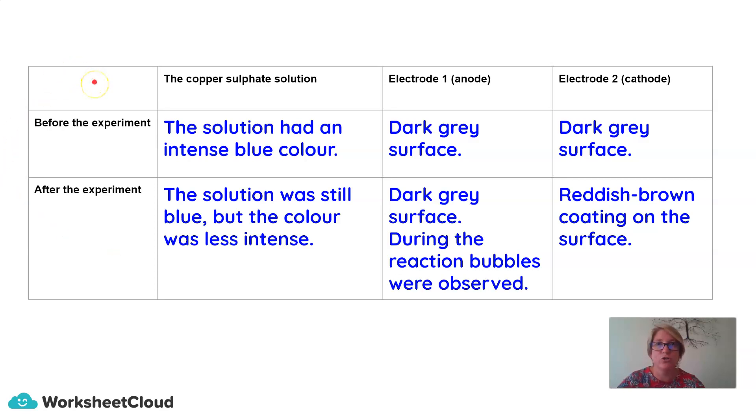If we have a look at the table that I asked you to complete, the copper sulfate solution at the beginning of the experiment had an intense blue color. But at the end of the experiment, the solution was still blue, but the color was not as intense. The anode had a dark gray surface, and the cathode surface was dark gray at the beginning. At the end of the experiment, it had a reddish brown coating on it.